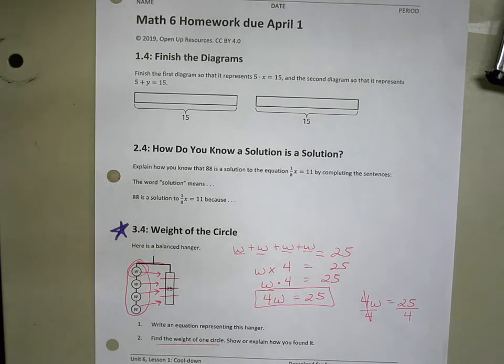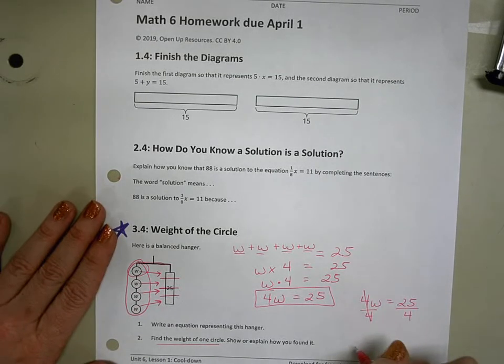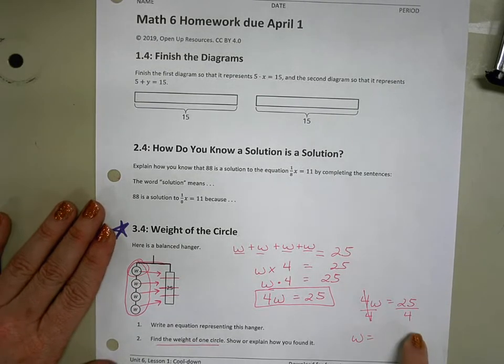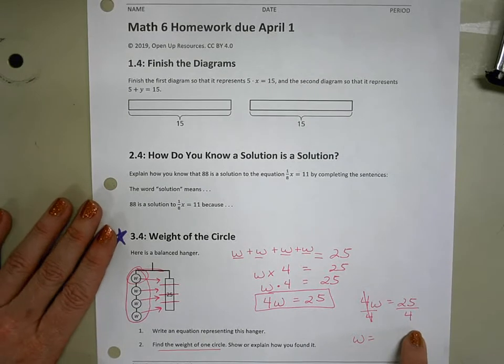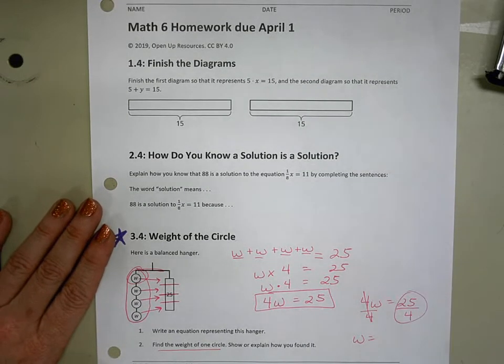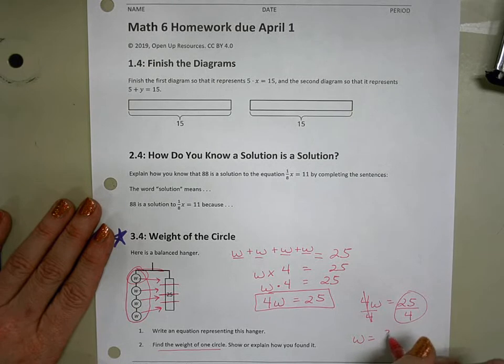And then you might say, but Ms. McPhee, I don't know, four times nothing gives me 25. Hey, remember, a division problem is also a fraction. You're done. 25 divided by four is 25 fourths.